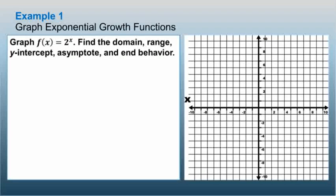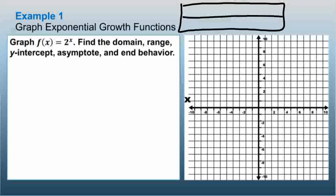For our first example of exponential growth, we need to graph the function, find the domain, range, y-intercept, asymptotes, and end behavior. To do this, we can come up with a table of coordinates. This will be our x and this is our y, using basic numbers.